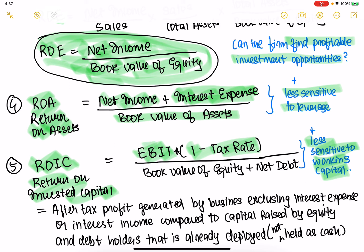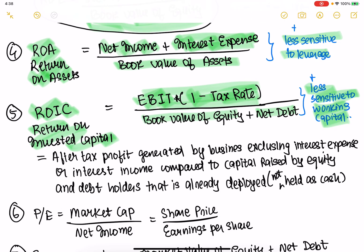ROIC uses EBIT multiplied by one minus the tax rate — which is basically the after-tax profit — divided by book value of equity plus net debt. This is a really good measure to find out the after-tax profit generated by the business compared to the capital raised by equity and debt.